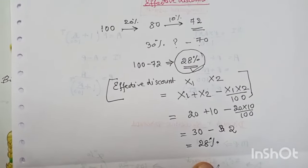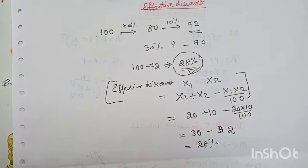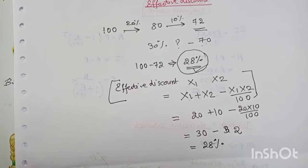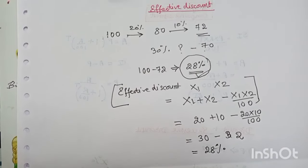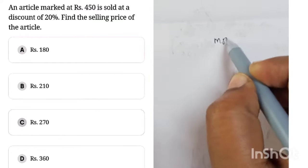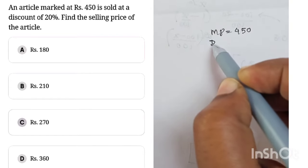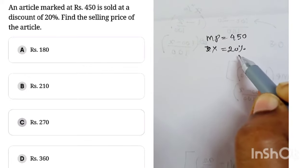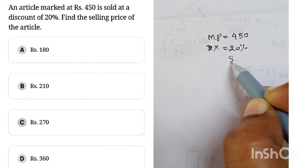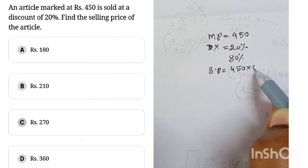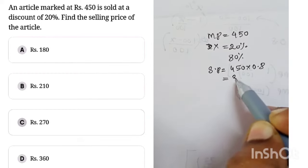I hope you understood successive discount and effective discount and how to find selling price when there is a discount. Now we will see some questions from the ATC paper. In this question, marked price = 450 and discount x = 20%. A 20% discount means they sold it at 80%, so selling price = 450 × 0.8 = 360.